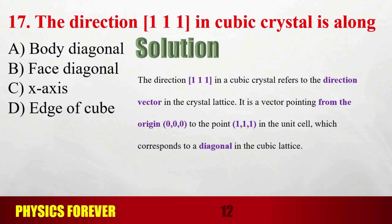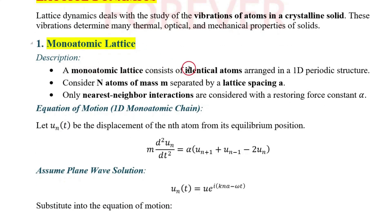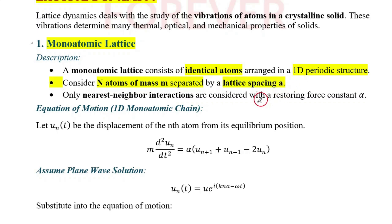Today we discuss lattice dynamics from solid state physics. In lattice dynamics there are two cases: monoatomic lattice and diatomic lattice. A monoatomic lattice consists of identical atoms in a one-dimensional periodic structure. We consider N number of atoms of mass m separated by lattice spacing a, and only nearest-neighbor interactions are considered.